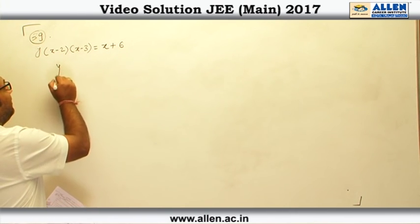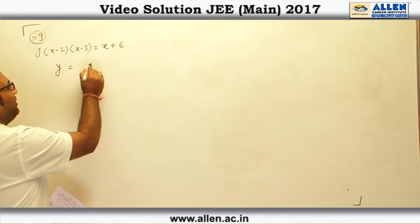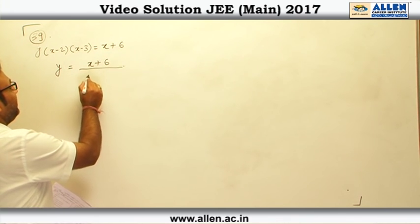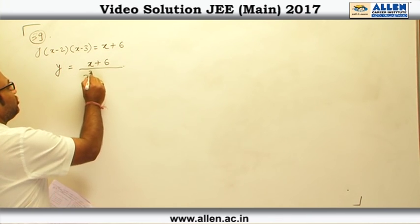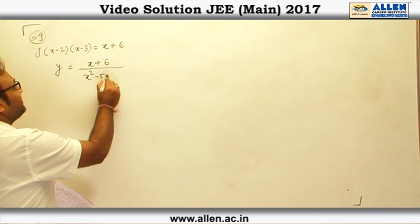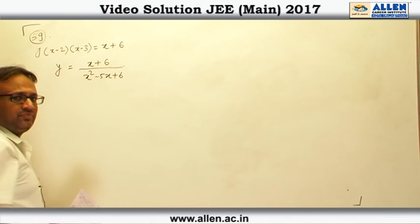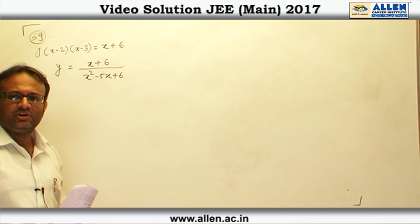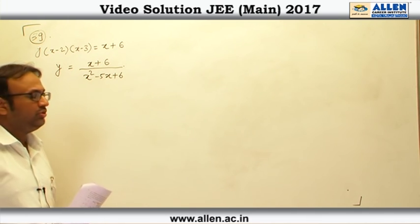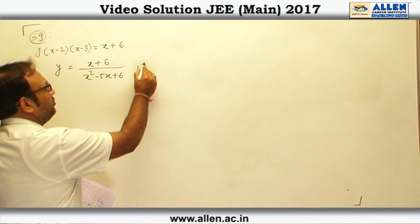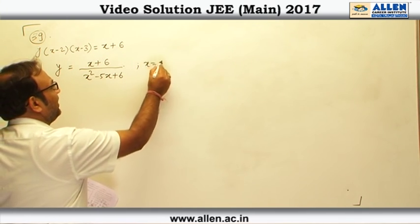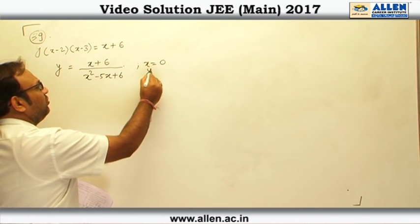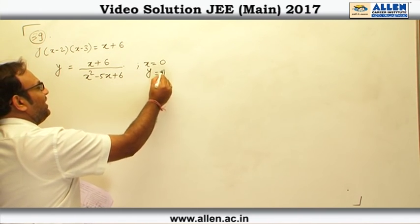First, let us write the curve explicitly as y equal to x plus 6 divided by x square minus 5x plus 6, and we need to write the normal to this curve at x equal to 0. First let us find, at x equal to 0, the value of y. If you put x equal to 0, we get y equal to 1.